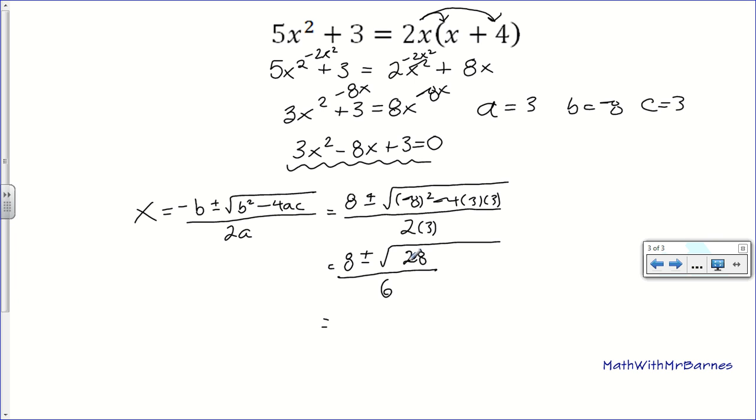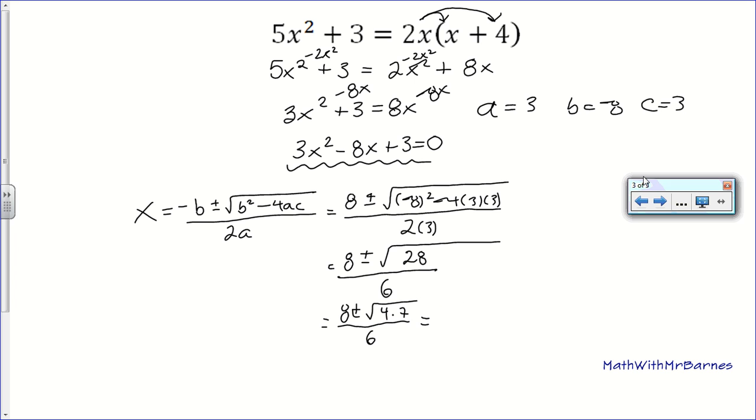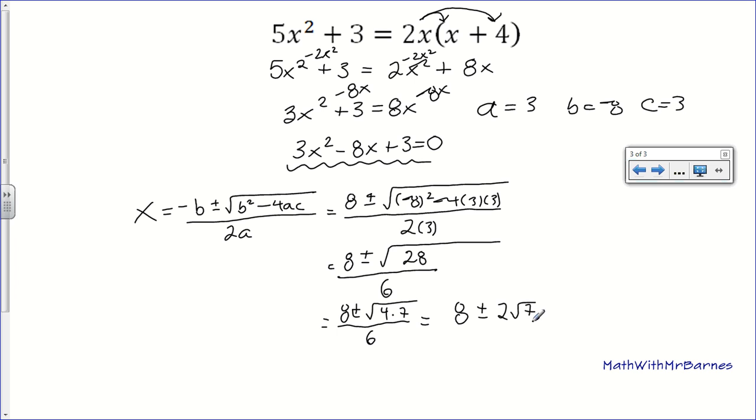So, then we need to break this 28 up. So, we need a perfect square. So, 4 times 7. If you're lucky enough to have a Casio calculator, chances are it will do it for you. TI's that I've used haven't been able to do that. So, and then square root of 4 is 2. So, it's 8 plus or minus 2 root 7 over 6.